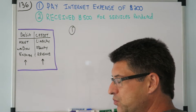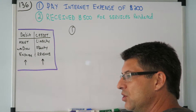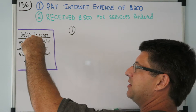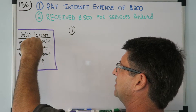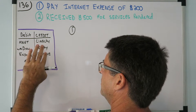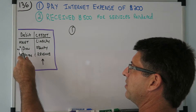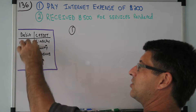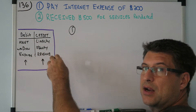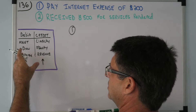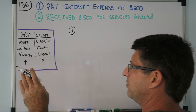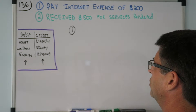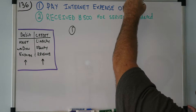This rule goes for all the accounts. If a liability is increasing you credit it; if it's decreasing you debit it. It's pretty much a mirrored image. If an asset, withdrawal, or expense is increasing you debit it; if decreasing you credit it. Now let's take care of these two journal entries.